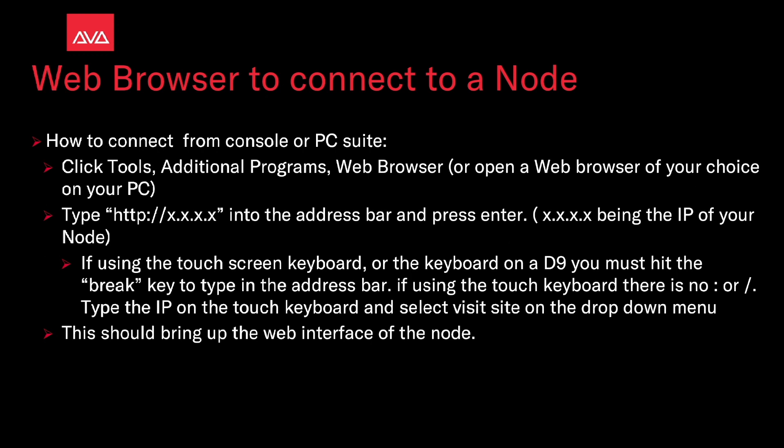Type http://x.x.x.x into the address bar and press Enter — x.x.x.x being the IP of your node or device you're trying to connect to. If you're using the touchscreen's keyboard or the keyboard on the D9, you must hit the Break key to type in the address bar. If you're using the touch keyboard, there is no colon or slash — just type the IP on the touch keyboard and select Visit Site on the drop-down menu.